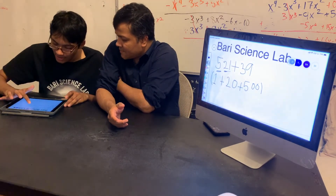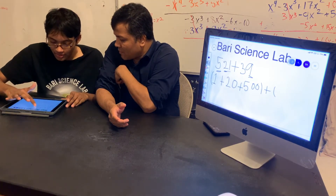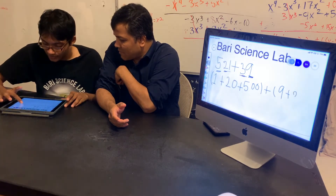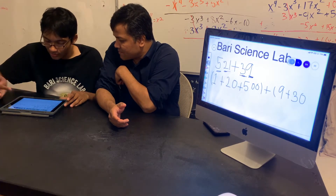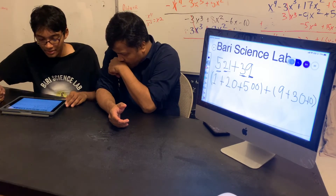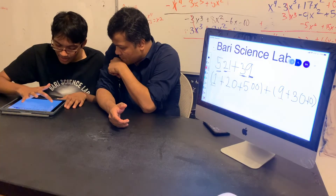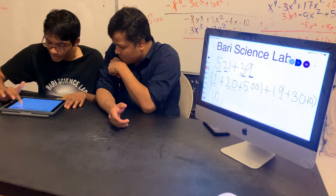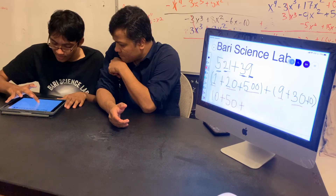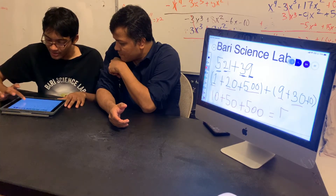Now I have to do the second number: thirty-nine. I can write it as nine groups of one, plus three groups of ten, plus zero groups of hundred. So adding them all: one plus nine gives me ten, twenty plus thirty gives me fifty, plus five hundred. Five hundred plus fifty plus ten — five sixty. Same answer. Very good.